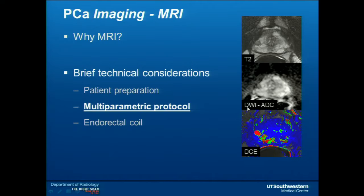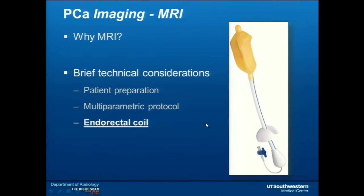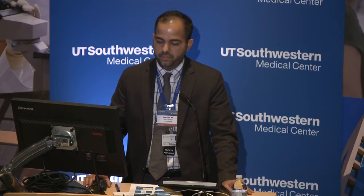Those three pulse sequences are high-resolution T2-weighted images, diffusion-weighted images, and dynamic contrast-enhanced images. The third common question is about the endorectal coil. More and more you will hear about groups not using the endorectal coil, and it is in everyone's best interest to get rid of it responsibly. However, as of today there is no solid data showing we can perform this study without the endorectal coil and without missing important information. The standard of care and the best images are obtained with a 3 Tesla endorectal coil multiparametric MRI of the prostate.